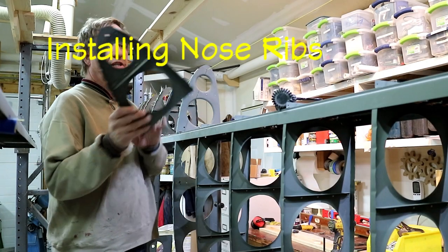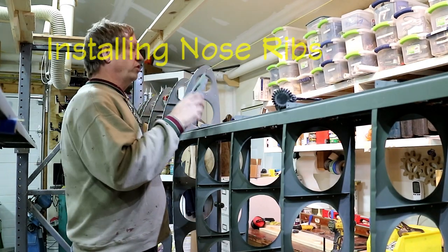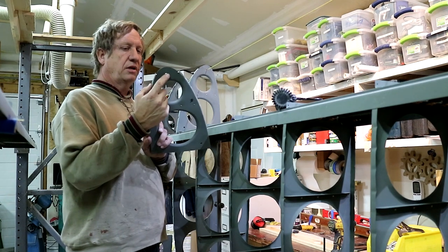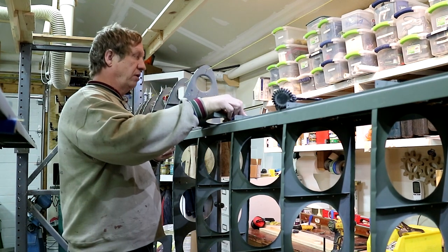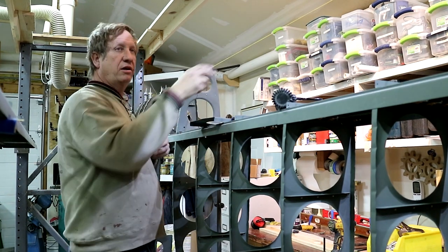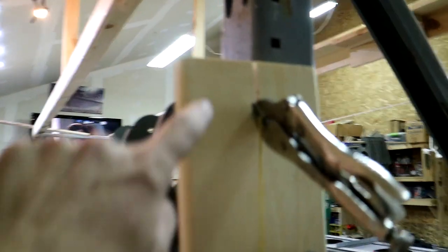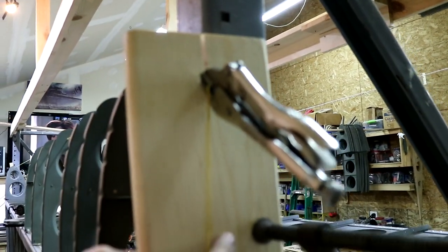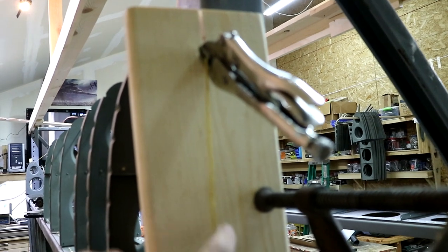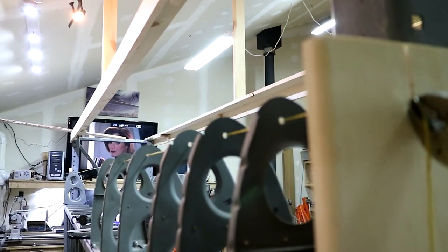I'm installing nose ribs now. I'm using a string through the alignment hole on the top. The string's right here. On this end I cut a slot in this board, clamped it on this frame so that it aligns perfectly down the holes.